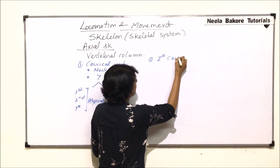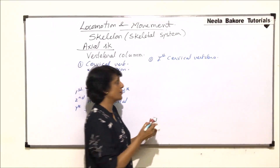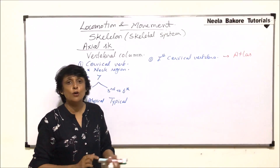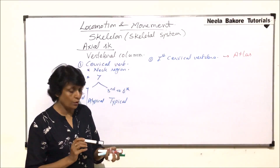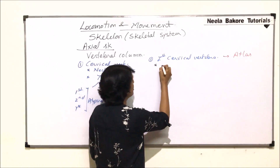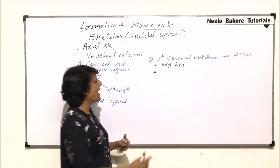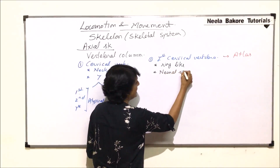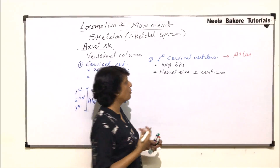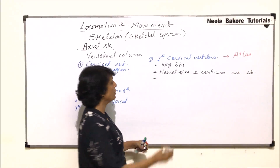The first cervical vertebra is known as atlas. After we understand its structure, we will be able to correlate why this name has been given. A few important things: it is a ring-like structure. The neural spine and centrum are absent — the centrum is on the ventral side, the neural spine on the dorsal side. Transverse processes are present but reduced.